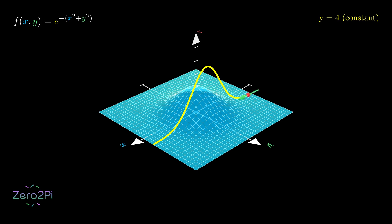As this dot moves, its path is determined only by the changing x value. The green line shows the tangent, the slope, at every point along that slice. That slope is the partial derivative with respect to x. It's the instantaneous rate of change in the x direction.